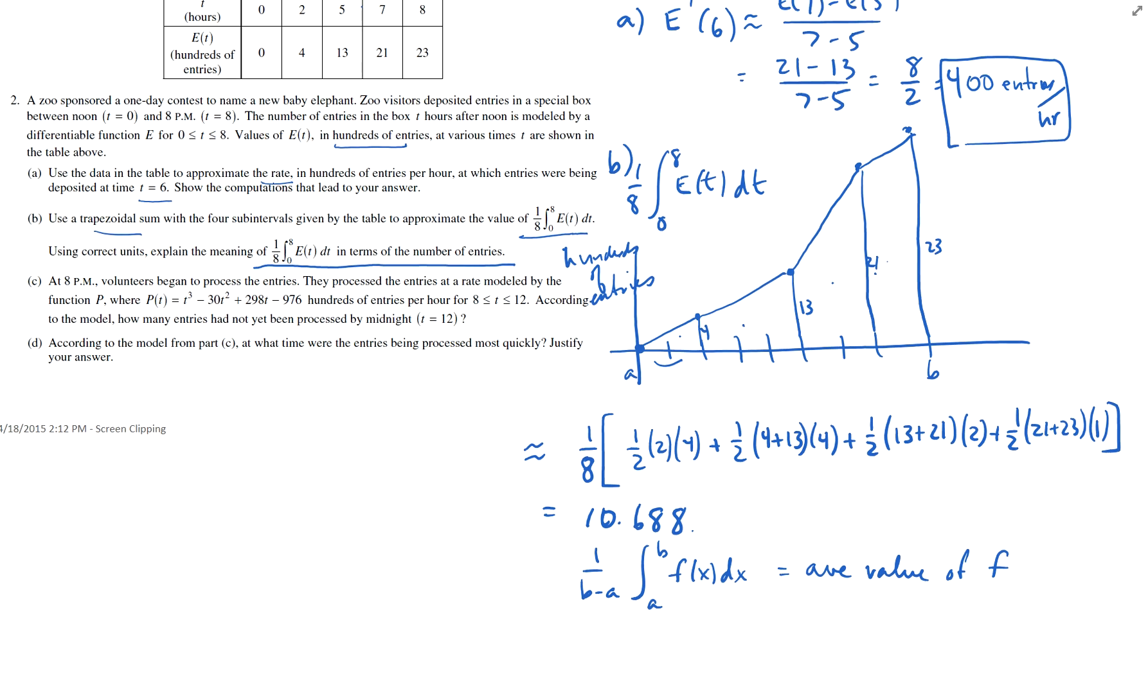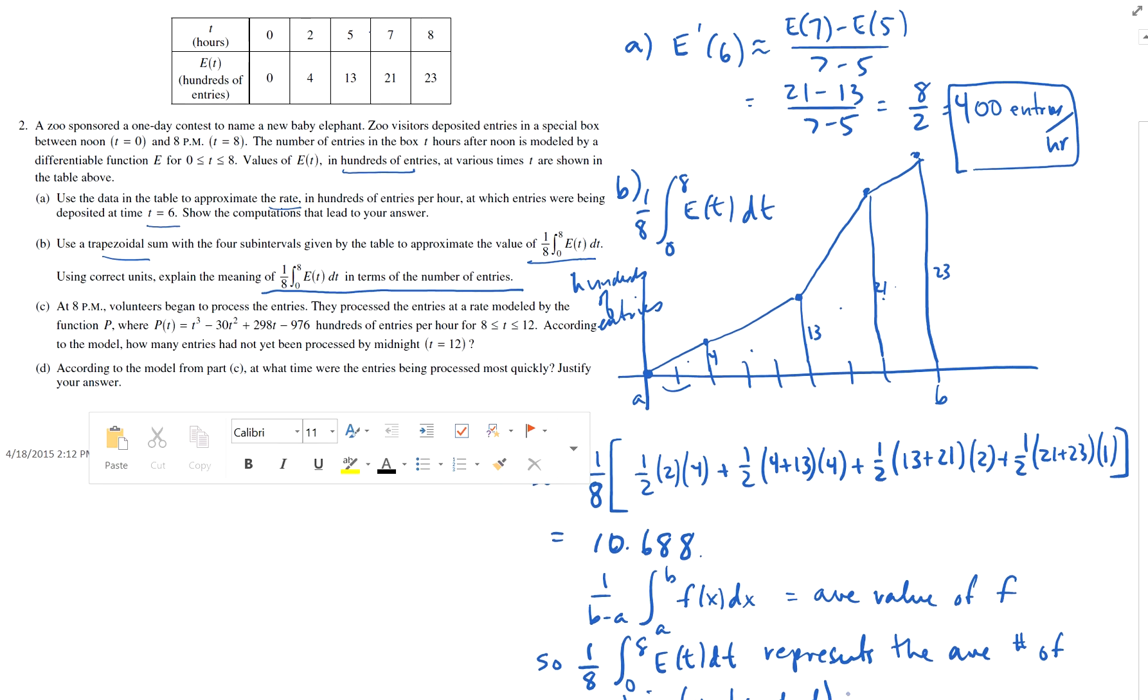So this is the, so this right here represents the one-eighth, the integral from zero to eight of e of t dt represents the average number of entries in hundreds, the average number of entries in hundreds, received, right? Okay. Does that make sense?